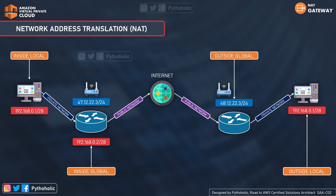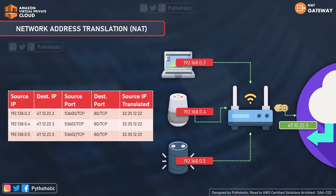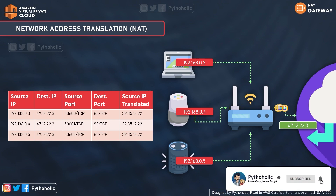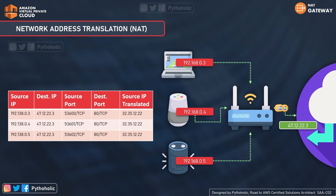But how does NAT know which IP the request came from and to whom the response should be sent? All our devices have a local IP which is the source IP, and there's a web service as the destination IP. The NAT table maps all source IPs with their source ports to a translated public IP used for communication. Different source IPs share the same translated IP, and using the port and IP mapping, NAT does a reverse address translation and sends the appropriate response to the requester.